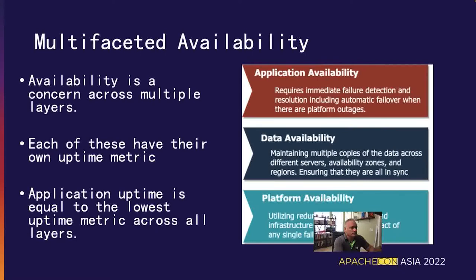When people use the term availability, they tend to think of only platform availability — i.e., is the system up or down. This is because availability is generally considered a DevOps concern, but it is also an application and data concern as well. One approach to providing high availability is to distribute platform resources across different zones and geographical regions. While necessary, this isn't sufficient for continuous availability. The data used by the system must be kept in sync across zones and regions as well, and from an application perspective, it is incumbent upon your application to immediately detect a failure and automatically switch over to the active platform seamlessly.